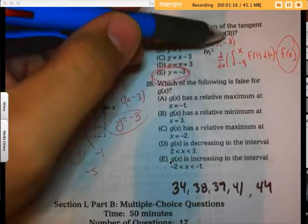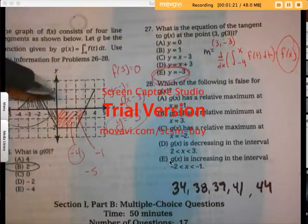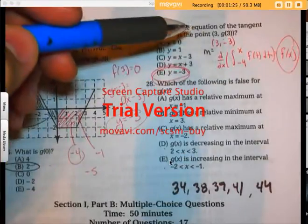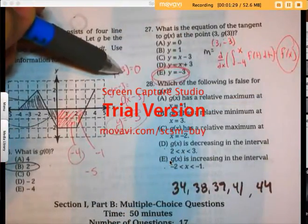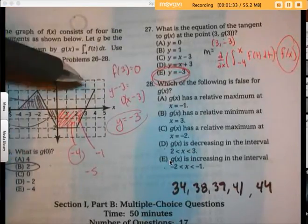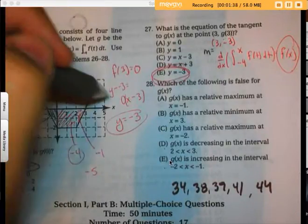I found g(3) by finding the area under the curve from negative 4 to 3, and I found the slope by taking the derivative of the integral, which is just f(x), plugging in 3 and looking for the point of f at 3, which is 0. Then it's just a matter of plugging in my y1, x1, and m.